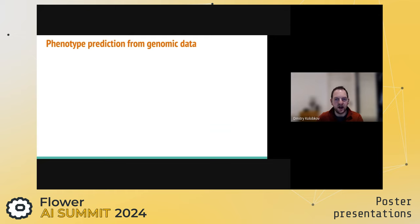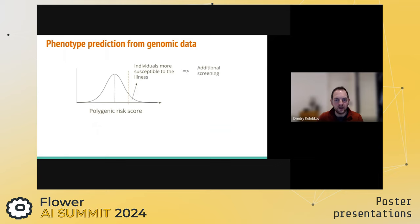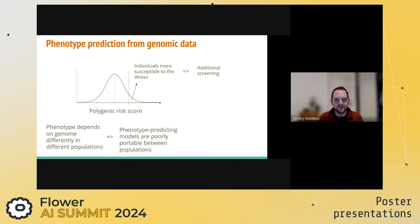Genomic data is the information contained in our DNA. Our genome contains a lot of valuable data that, for example, helps us invent new drugs. The most direct use of genomic data in machine learning is to predict a phenotype — an observable effect of the interaction of an individual's genome with the environment. The goal is to identify individuals more susceptible to a certain disease due to their genetics, who can then be monitored more closely to detect the disease at an early stage. Phenotype-predicting models trained on one population can poorly perform when tested on another, and the majority of genetic data comes from individuals of European descent, which increases disparity in healthcare.